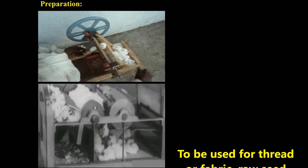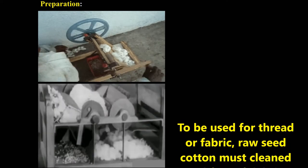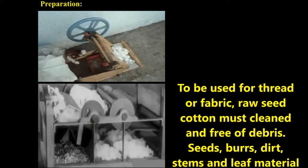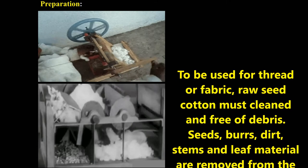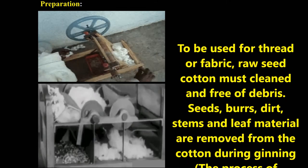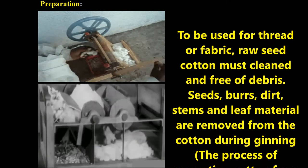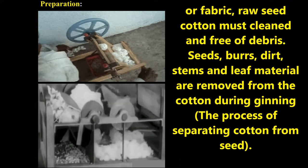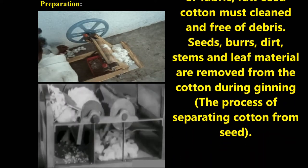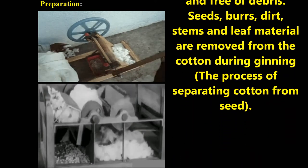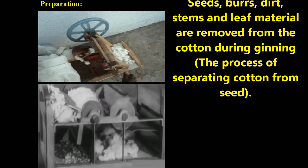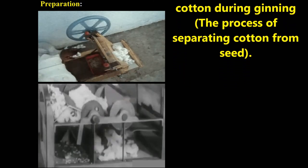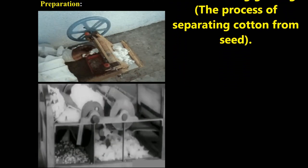Preparation: In this process, the raw seed cotton must be clean and free of dry seeds, dirt, stems, and leaves. These materials are removed from the cotton during ginning. The process of separating cotton from the seed is called ginning.